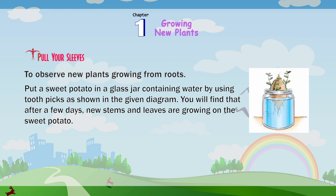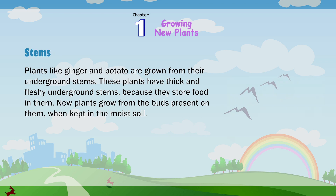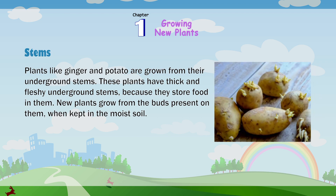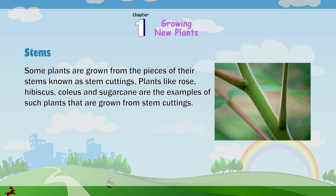Pull up your sleeves. To observe new plants growing from roots, put a sweet potato in a glass jar containing water by using toothpicks as shown in the given diagram. You will find that after a few days, new stems and leaves are growing on the sweet potato. Stems: plants like ginger and potato are grown from their underground stems. These plants have thick and fleshy underground stems because they store food in them. New plants grow from the buds present on them when kept in moist soil. Some plants are grown from pieces of their stems known as stem cuttings. Plants like rose, hibiscus, coleus and sugarcane are examples of plants grown from stem cuttings.